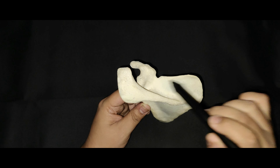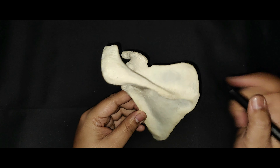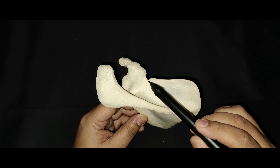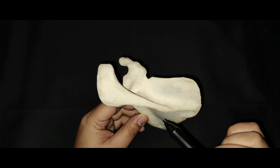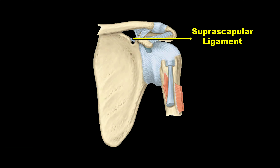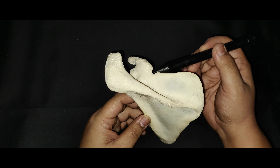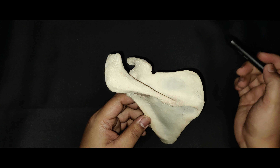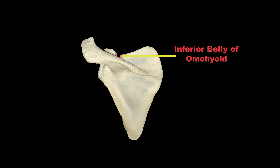The superior border is the shortest border and extends between the superior and the lateral angles. The suprascapular notch is present on this border near the root of the coracoid process. This notch is converted into a suprascapular foramen by the superior transverse or the suprascapular ligament. The suprascapular artery passes above the ligament and the suprascapular nerve passes below the ligament through the suprascapular foramen. The inferior belly of the omohyoid arises from the superior border near the suprascapular notch.